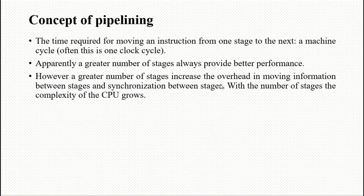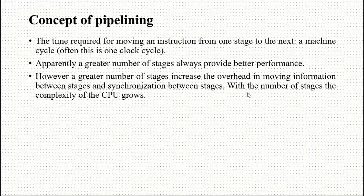The time required for moving an instruction from one stage to the next is called the machine cycle. A greater number of stages generally provides better performance — if the number of pipeline stages increases, performance increases. However, one disadvantage is that with more stages, the complexity of the CPU also grows. So you have to balance performance and complexity.